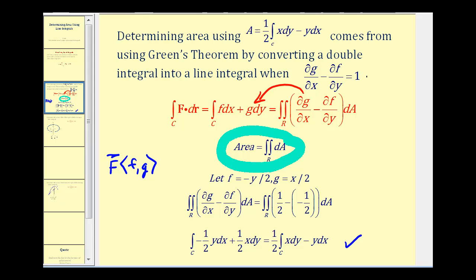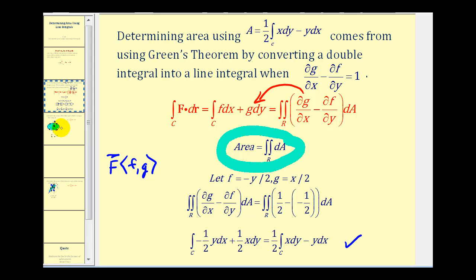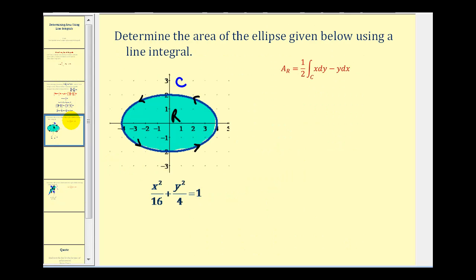Let's take a look at our example. We want to determine the area of the ellipse given below using a line integral. Notice how the orientation is counterclockwise. The curve is smooth, continuous, and connected. And the equation of our path is x squared divided by sixteen plus y squared divided by four is equal to one.